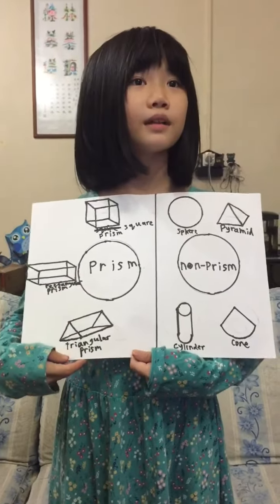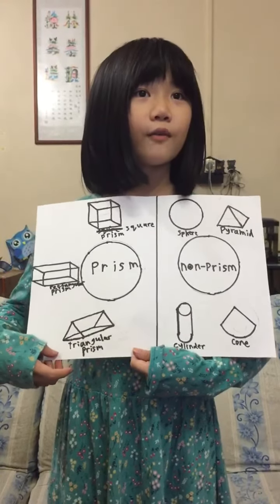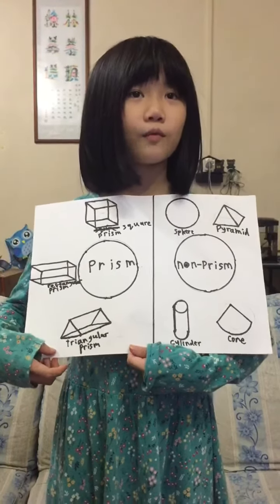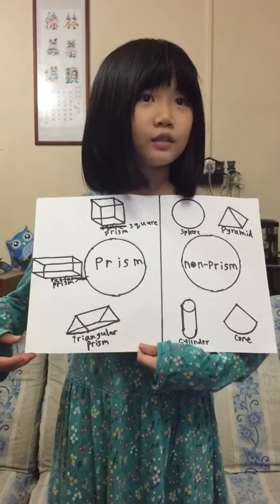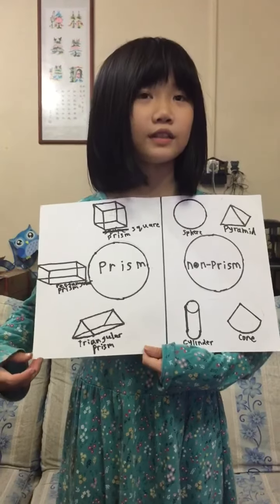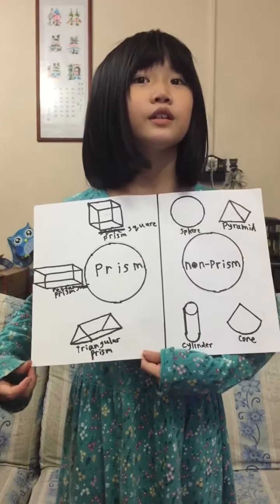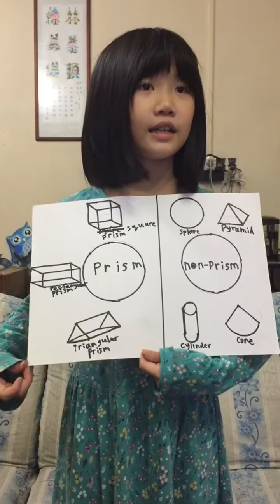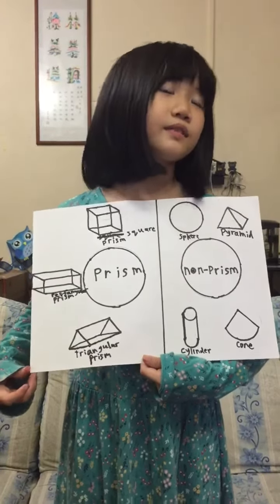Prisms normally have five or more flat surfaces. They have two opposite surfaces of the same shape and size, which is called the base, and they have no curved surface.